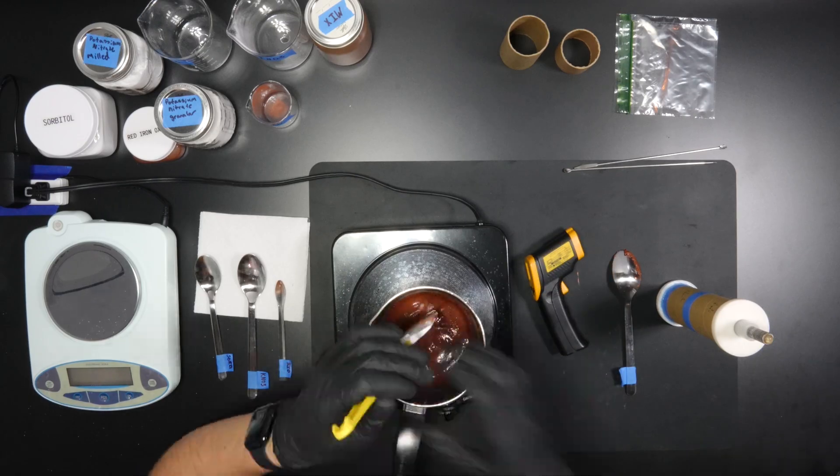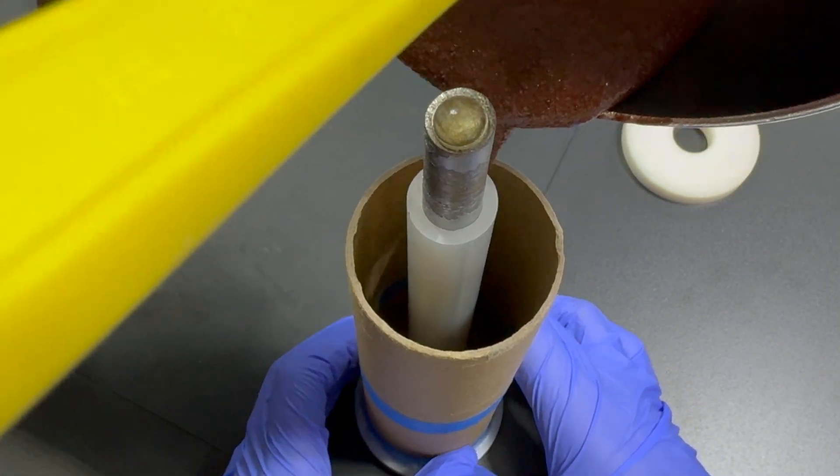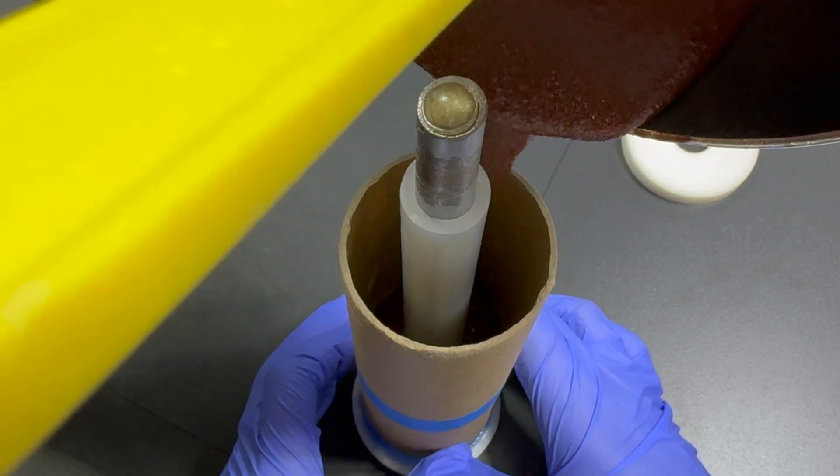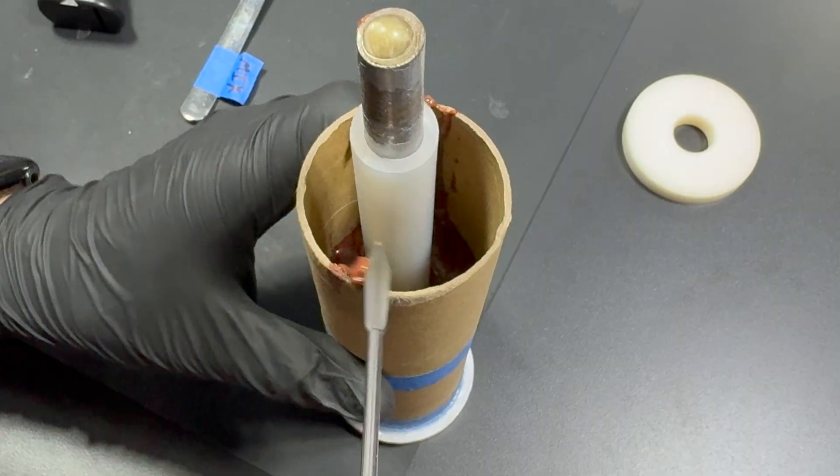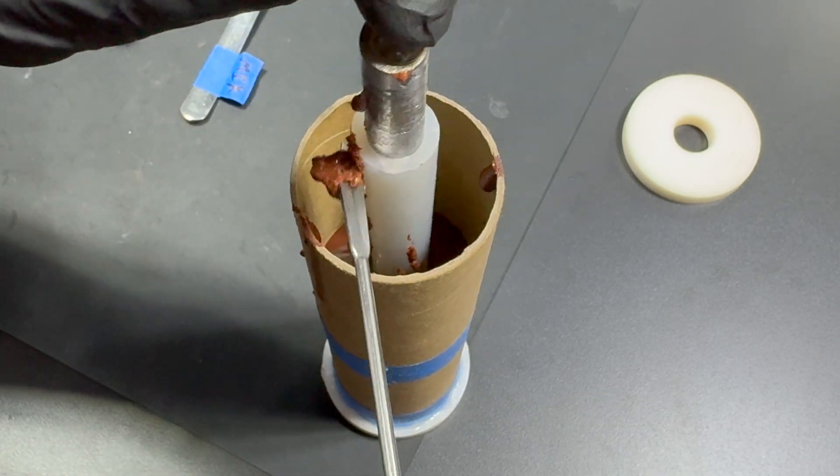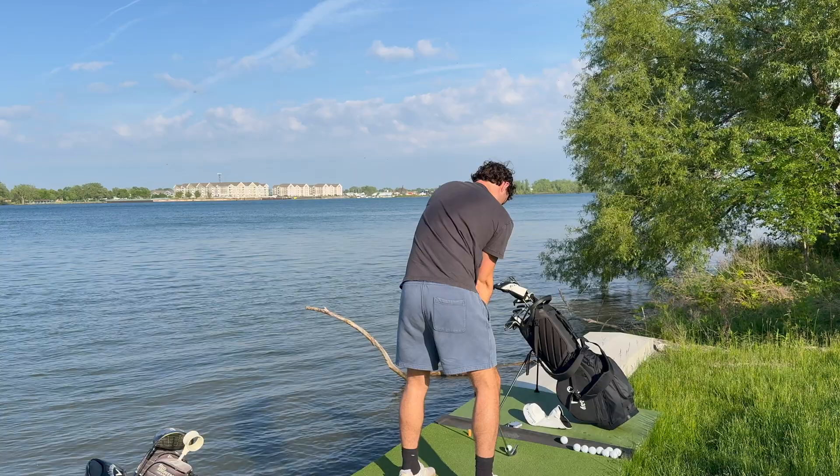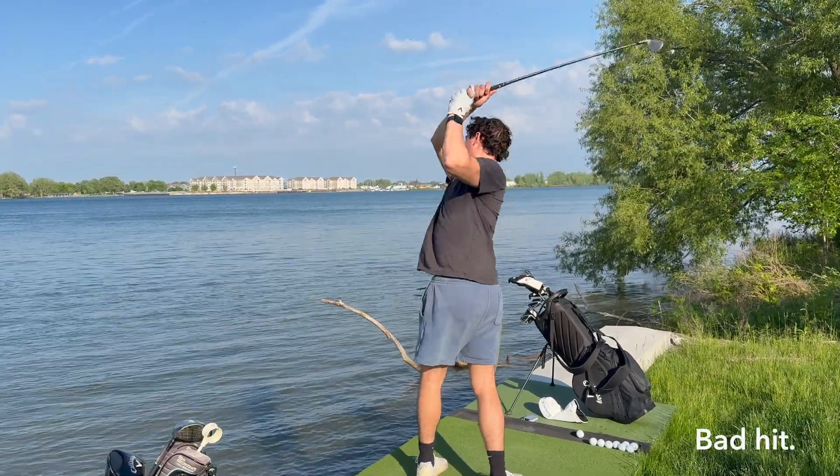Then I heat the propellant and pour it into the casing. The next pours are much simpler than the first one. Now I clean off any extra propellant on the coring rod or liner and add the top plate. Then I tamp for another 10 minutes. Then let it sit for another 3 hours and hit some more golf balls.